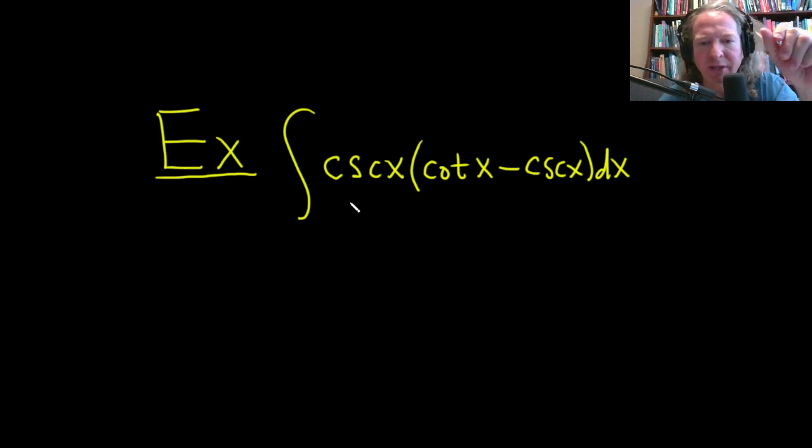We have a product here, so we need to figure out how to do this. One idea is to just distribute the cosecant and see what happens.